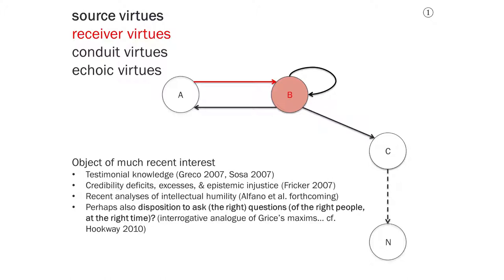There is perhaps also a disposition not to make assertions or take the assertions of others on board with the right amount of credibility, but also to ask questions, to use interrogative statements rather than assertions. And these would be the interrogative analogues of the Gricean maxims that we discussed just before in the section on source virtues, and they would have to do with asking the right questions of the right people at the right time for the right reasons and so on. Christopher Hookway published a paper in 2010 in the journal Episteme that had to do with such receiver virtues.